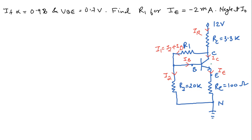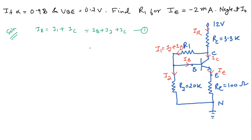For the transistor, three currents will be there: IE is equal to IC plus IB. Accordingly we are assuming the current directions — through R2, I2 is flowing, and through R1, I1 is flowing. Applying KCL at the base node, I1 is equal to I2 plus IB. At the collector node, IR is equal to I1 plus IC, where I1 is IB plus I2. So IR equals IB plus I2 plus IC — this is equation number 1.